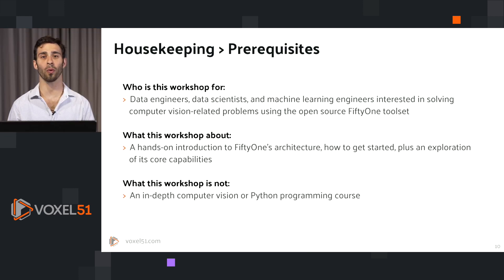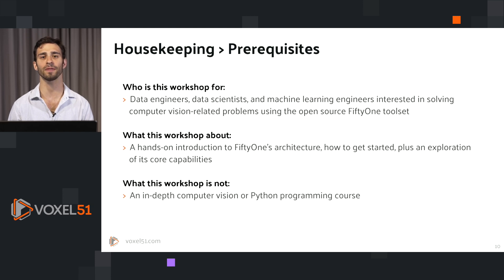Now who is this workshop for? This workshop is for data scientists, data engineers, machine learning engineers, and computer vision practitioners who want to use the FiftyOne toolset to solve their computer vision data problems. This is a hands-on introduction to FiftyOne. It is not an introduction to Python or machine learning — if you need to brush up on those topics first, I suggest you do so.